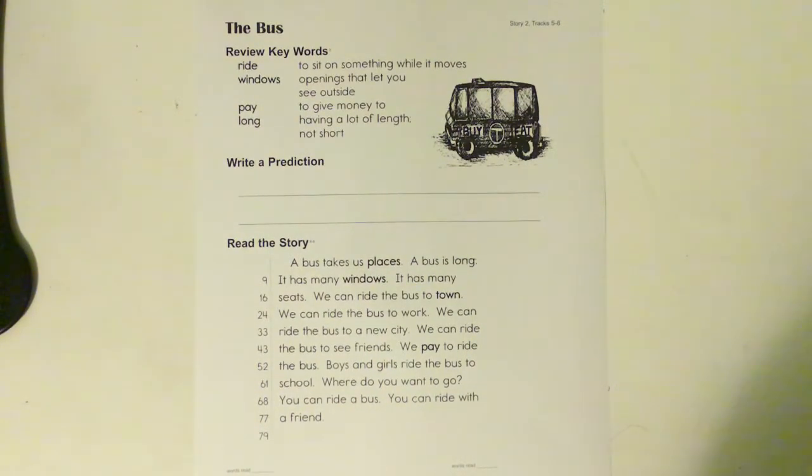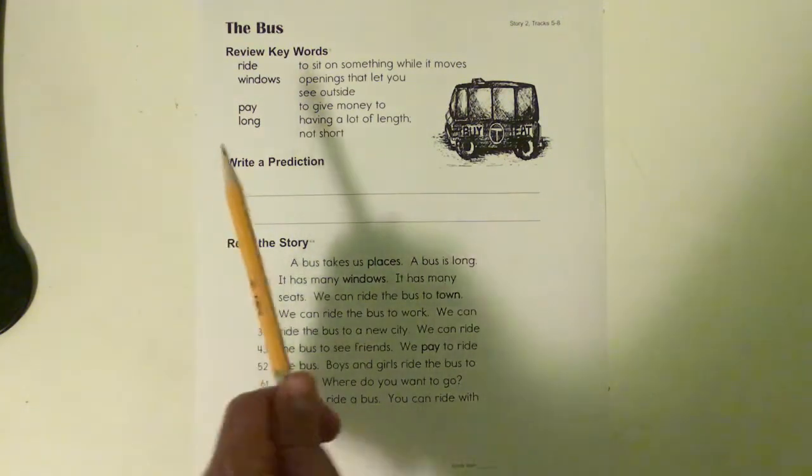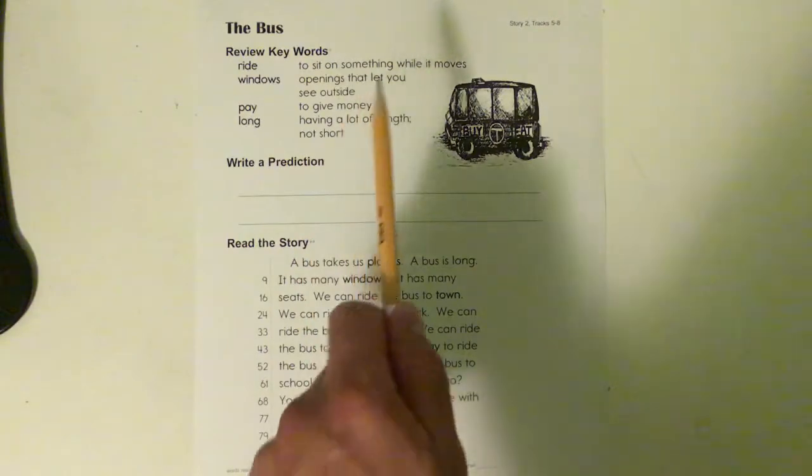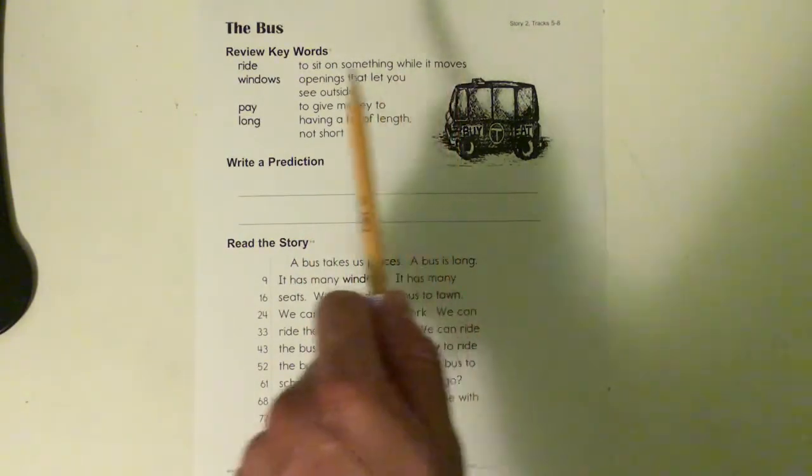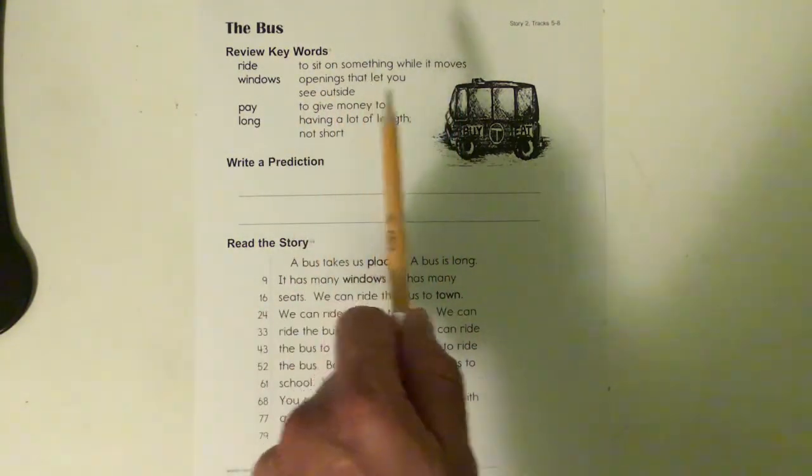Hello everybody, and today we will be reading 'The Bus.' All right, so this is our passage and again it's nonfiction. Review keywords: ride - to sit on something while it moves, windows - openings that let you see outside.